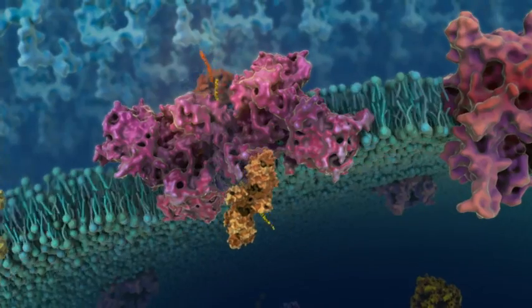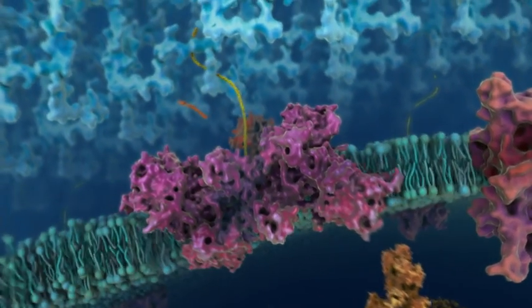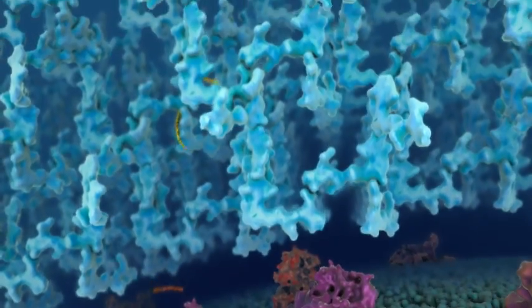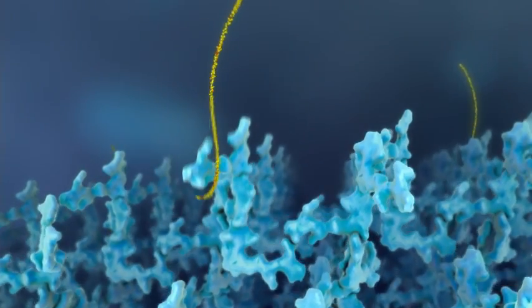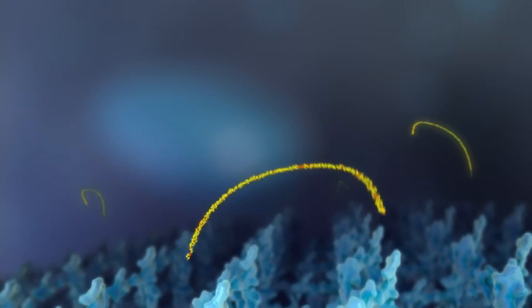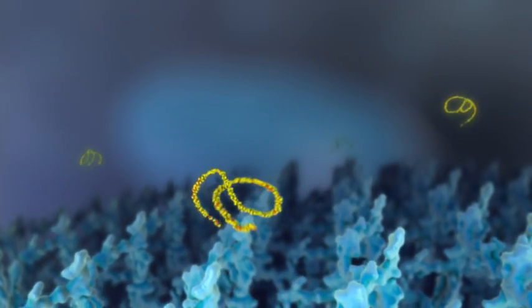The Sec translocase initiates protein secretion. As the leader signal peptide reaches the outside of the cell, it is cleaved by the membrane-bound peptidase, and the remaining protein is secreted and subsequently folds in the media.